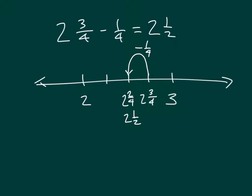The number sentence is: 2 and 3/4ths minus 1/4th equals 2 and 1/2. Originally it was 2 and 2/4ths, and we did simplify that to put it in simplest form.